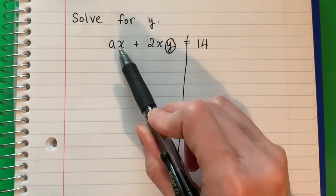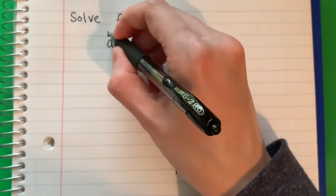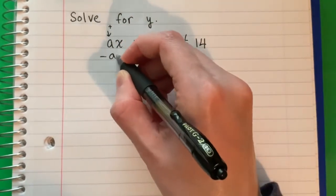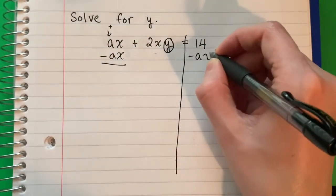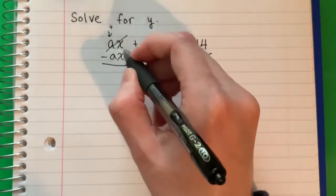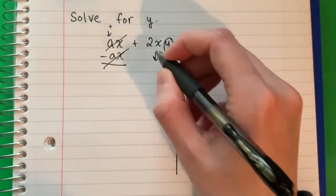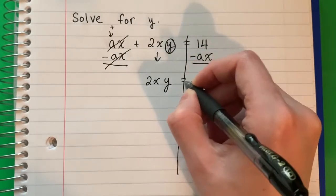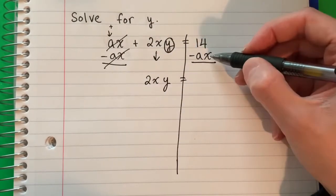So I'm going to move the 8x. This is positive, and the opposite is negative, so I'm going to do minus 8x. Copy minus 8x. 8x minus 8x is zero — cancel, cancel, copy down. 2xy equals 14 minus 8x.